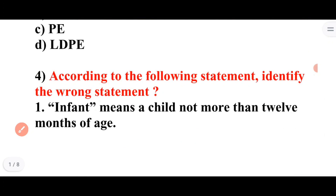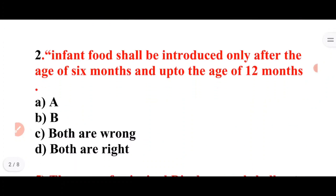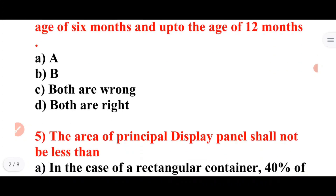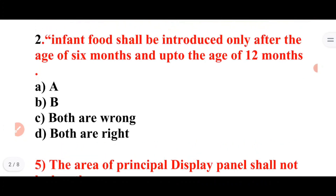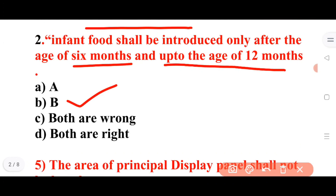Next question: Identify the wrong statement. Option 1: Infant means a child not more than 12 months of age. Option 2: Infant food shall be introduced only after the age of 6 months and up to the age of 12 months. Answer: B is the only correct statement — infant food shall be introduced only after 6 months and up to 12 months.